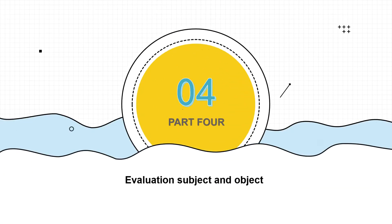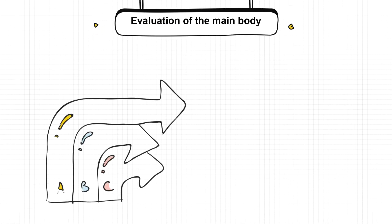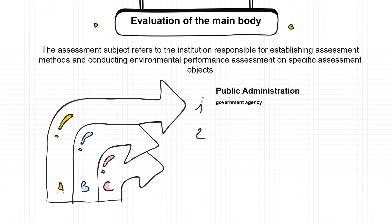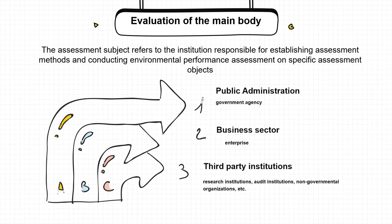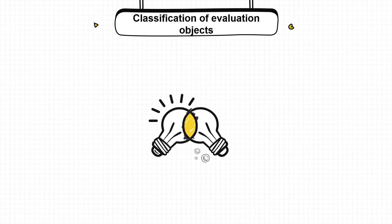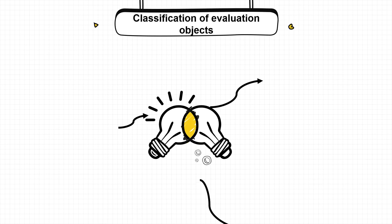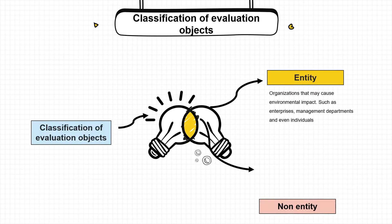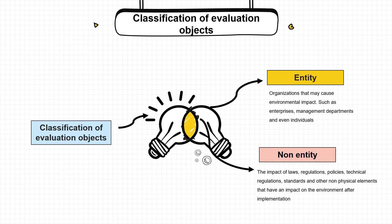The fourth part is the subject and objective evaluation. The evaluation subject refers to the organization responsible for clarifying the evaluation method and evaluating the environmental performance of the specific evaluation object. There are public administration agencies, corporate business units, and third-party agencies such as research institutions and auditors. The evaluation objects of the management department are divided into two aspects — regional and environmental — where regions refer to provincial, municipal, and national levels.